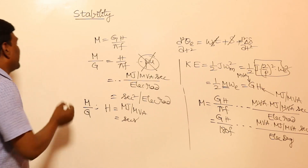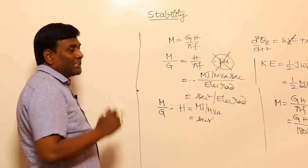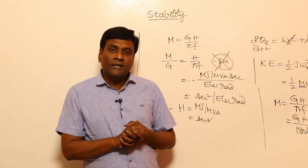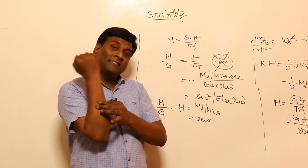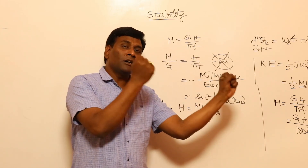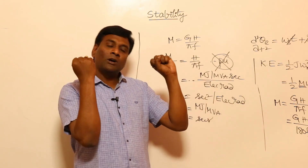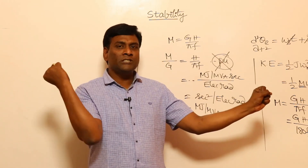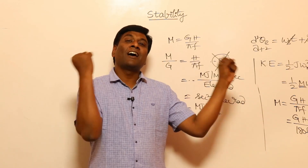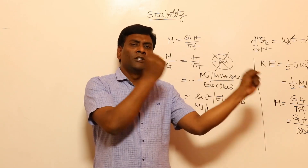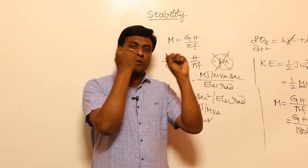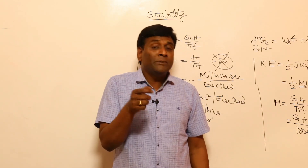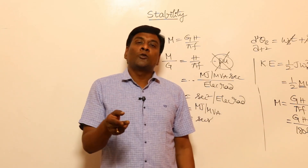The swing equation can also be applied to coherent and non-coherent multi-machine systems. If two alternator rotors swing together (in the same direction simultaneously), they are called coherent — swinging together. If they swing in opposite directions, they are non-coherent — swinging not together. In the next session, we will discuss in detail when machines can be considered as swinging together versus swinging apart.